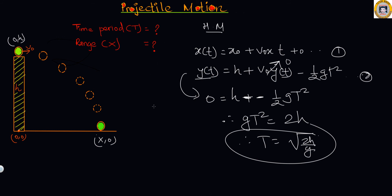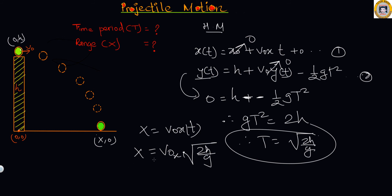The range is found as x equals v-naught-x times t. Since x-naught equals zero (starting from origin), x equals v-naught-x times the square root of 2h over g. In this way we can find the time of flight T and range x whenever the object is thrown horizontally from the top of a tower. I hope this video helps you understand projectile motion. Thank you, stay safe and healthy.